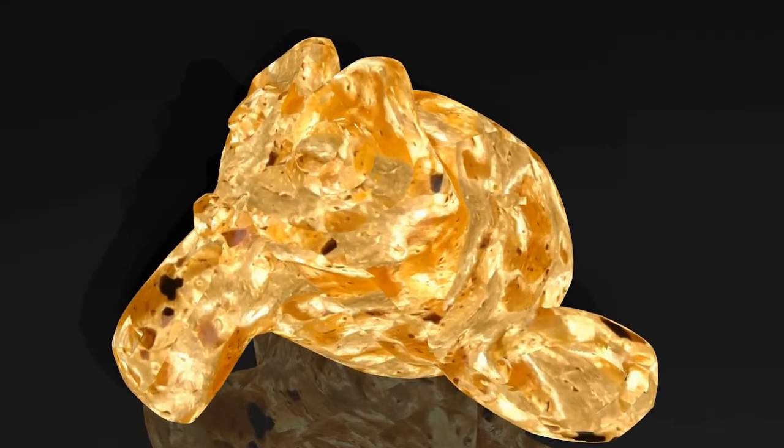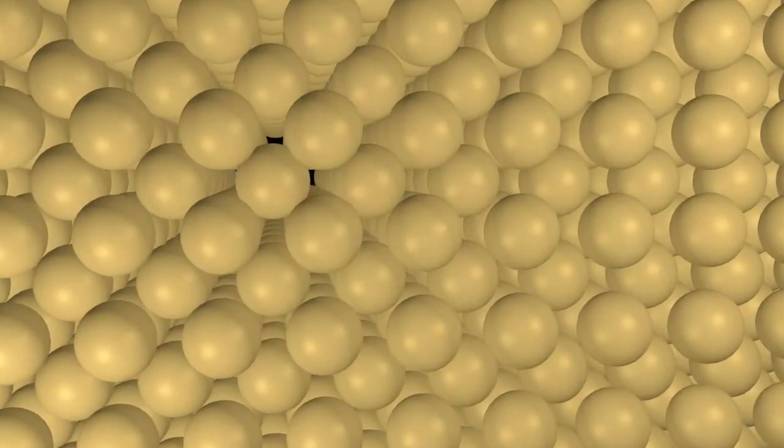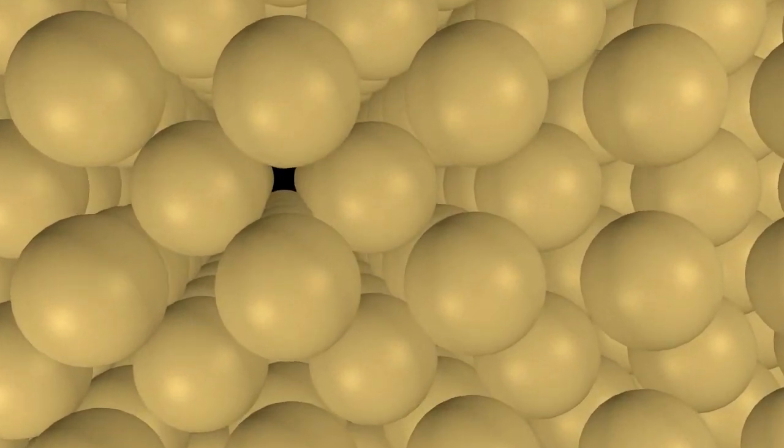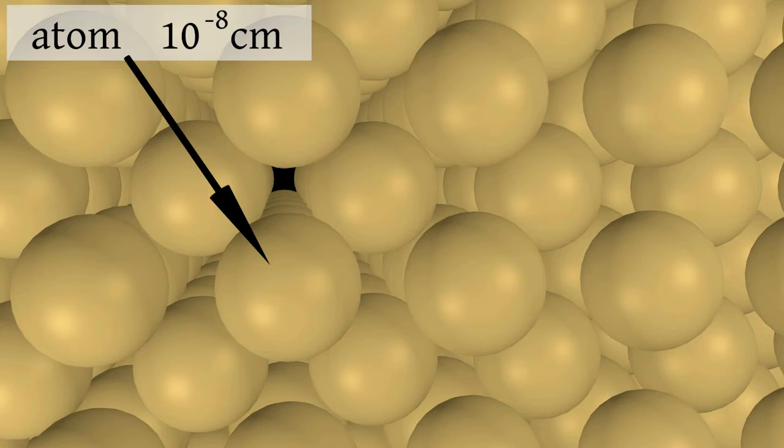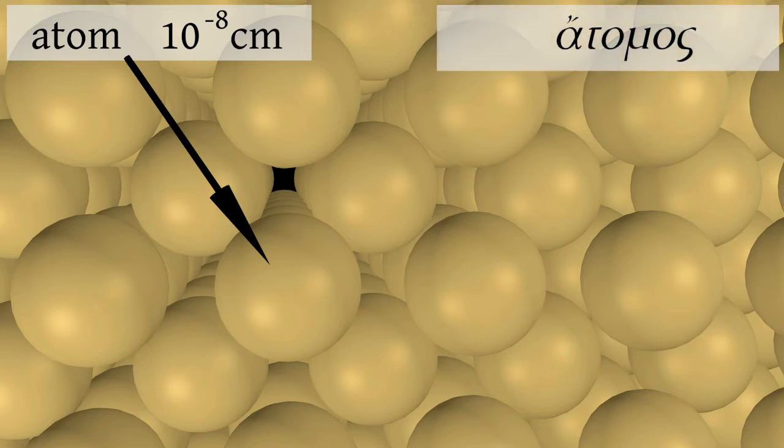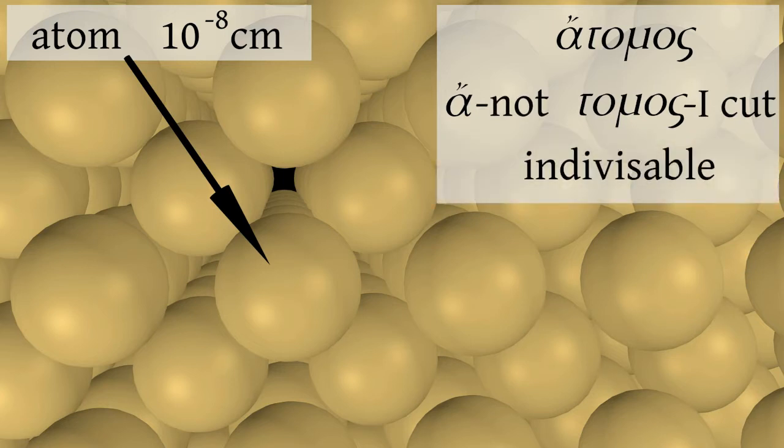With the help of an electronic microscope we can see molecules or atoms. The size of atoms is one million times smaller than the size of usual objects around us. It is about ten to the power of minus eight centimeters. The name atom comes from the Greek atomos, which means indivisible, something that cannot be divided further.